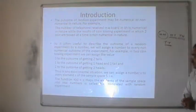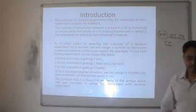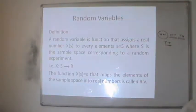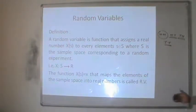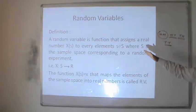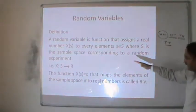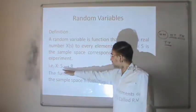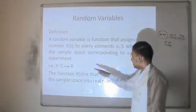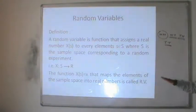A random variable is a number which is associated with the outcome of an experiment. The formal definition may be stated as follows: a random variable x is a function that assigns a real number x to every element of the sample space corresponding to the random experiment. That is, x is a function defined from the sample space to the real numbers, and this function which maps elements of the sample space into real numbers is called a random variable.